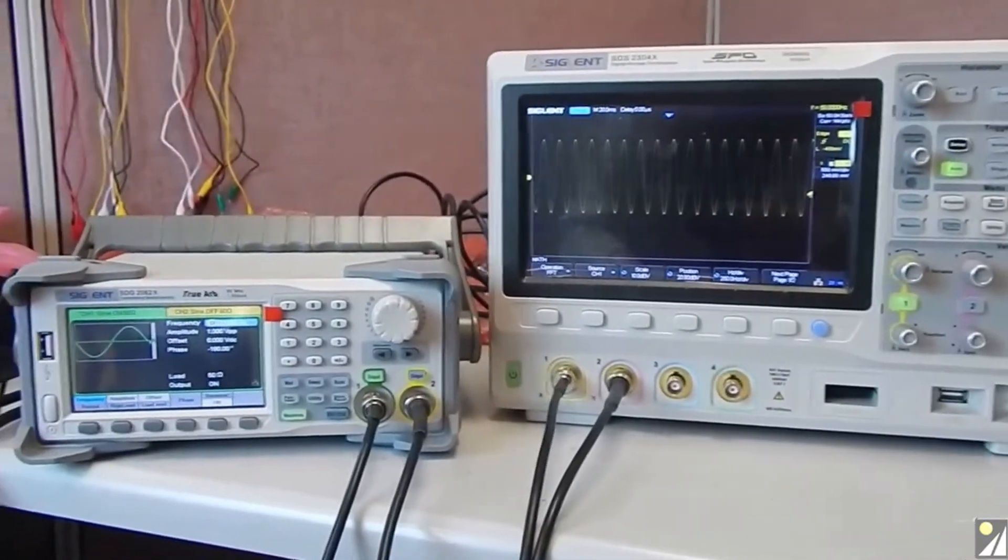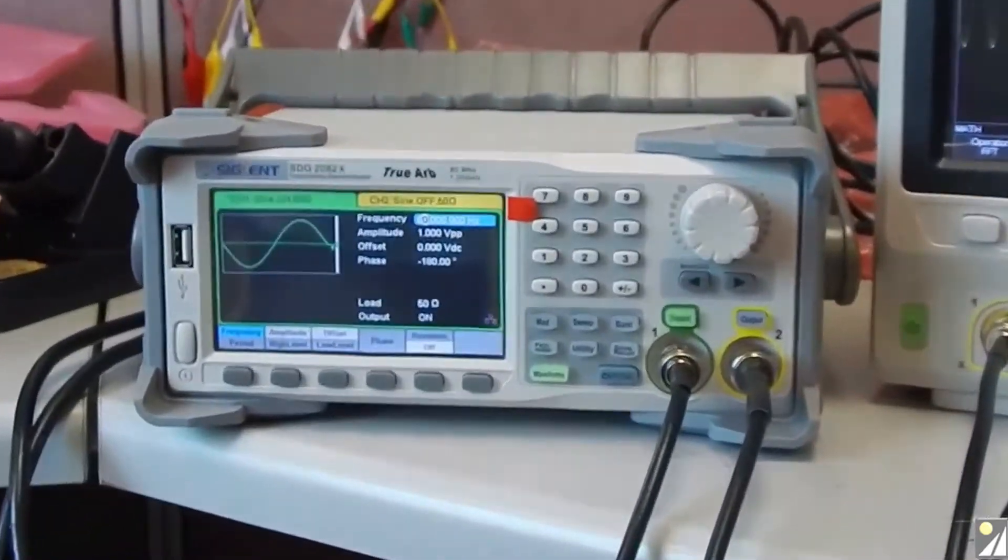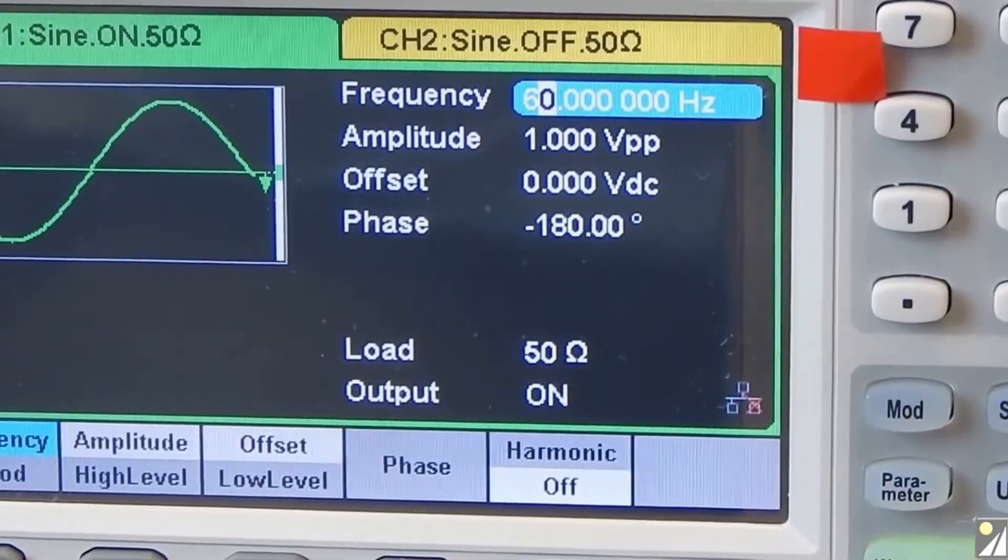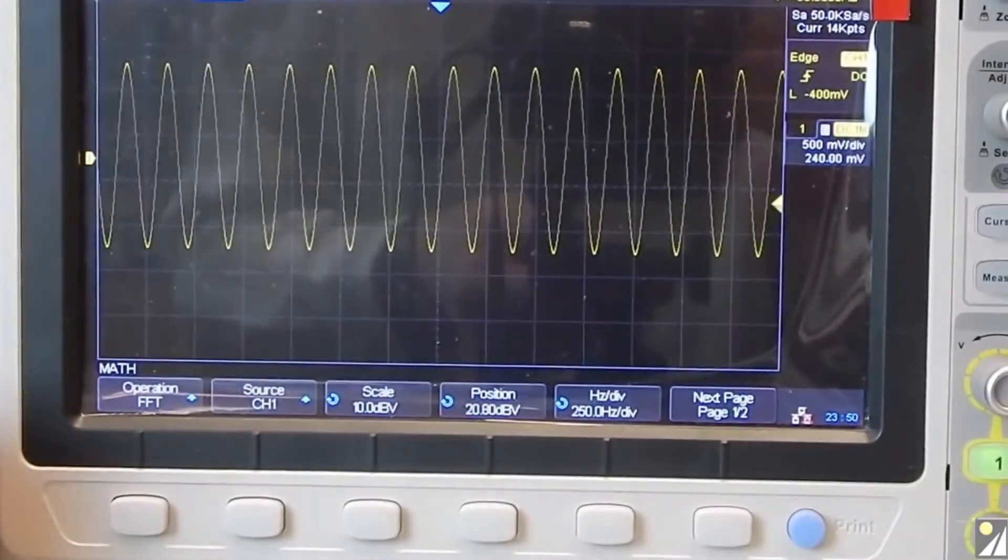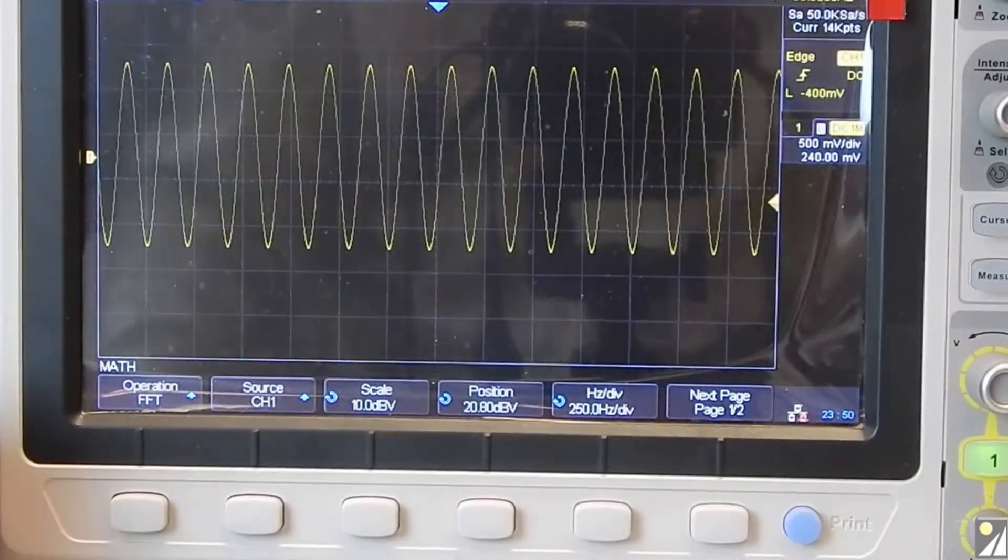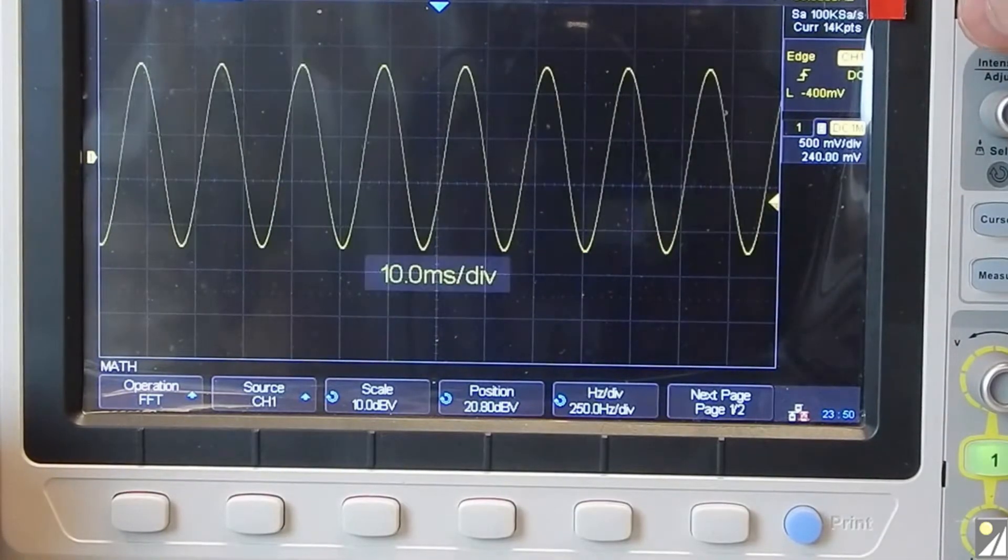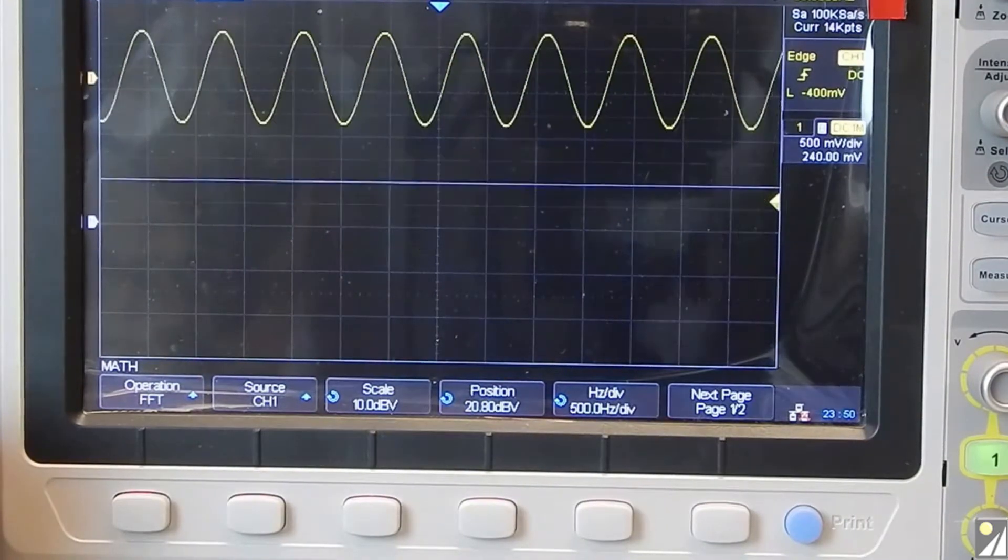So what we'll do is we'll start with just your basic 60 hertz sine wave here. That's one volt peak-to-peak and we're going to go straight into the oscilloscope and it looks as we expect. Now what happens, let's zoom in just a little bit, what happens if we add the FFT function?